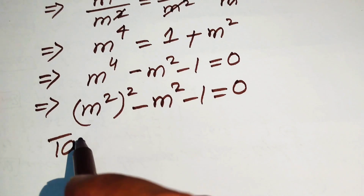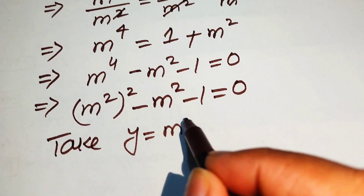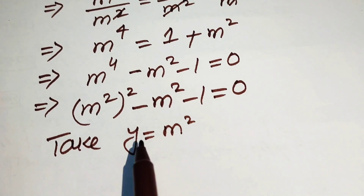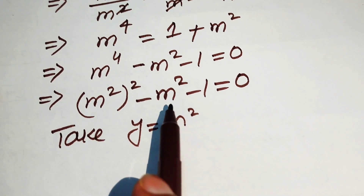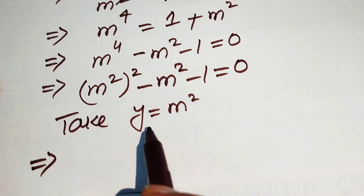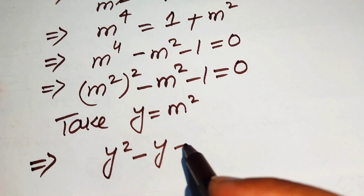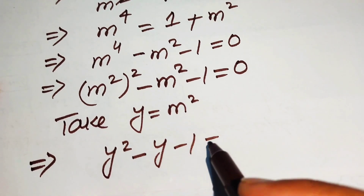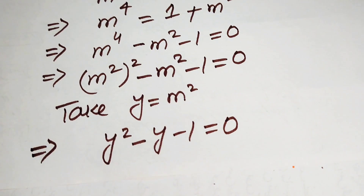We substitute y equals m², so the equation easily converts into quadratic form. It becomes y² minus y minus 1 equals 0, which is a quadratic equation in the variable y.